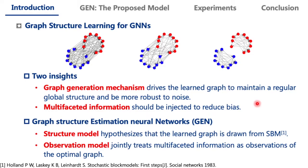It makes sense that the confidence of an edge would be greater if this edge exists under multiple measurements. Therefore, we propose graph structure estimation neural networks, GEN, to achieve aforementioned insights.